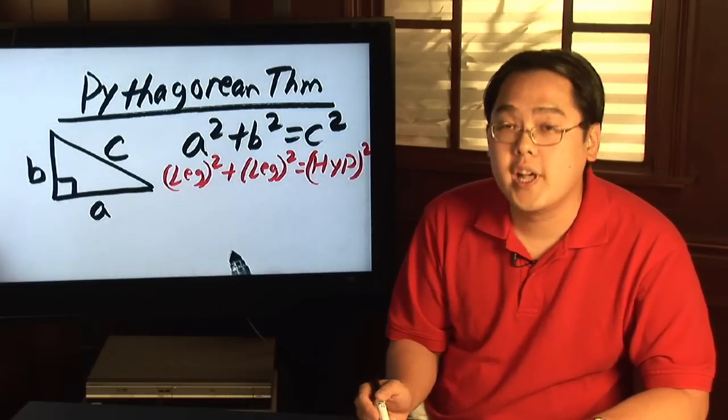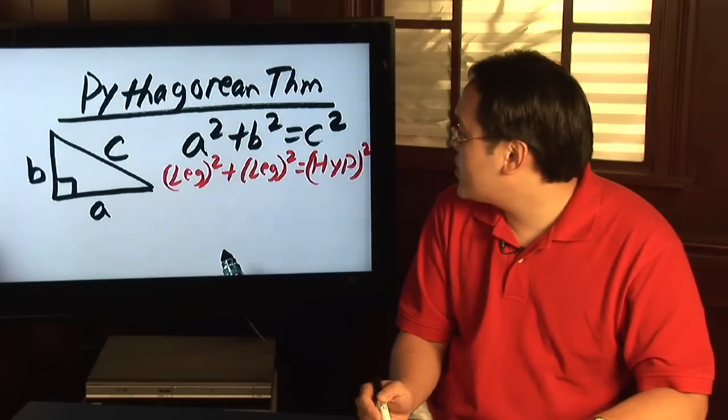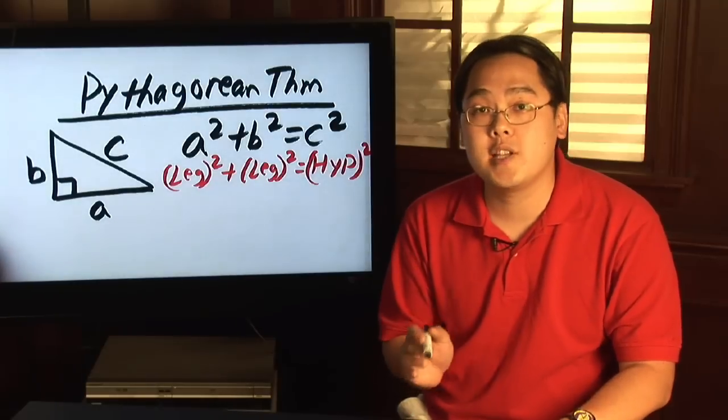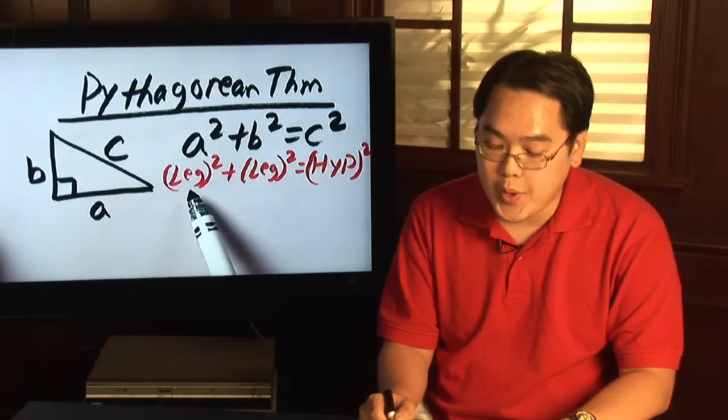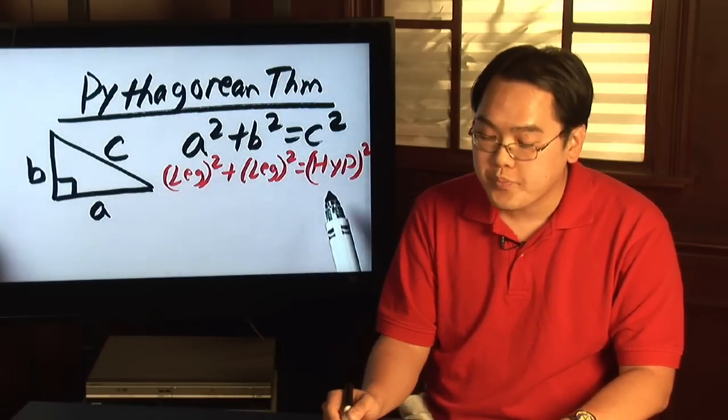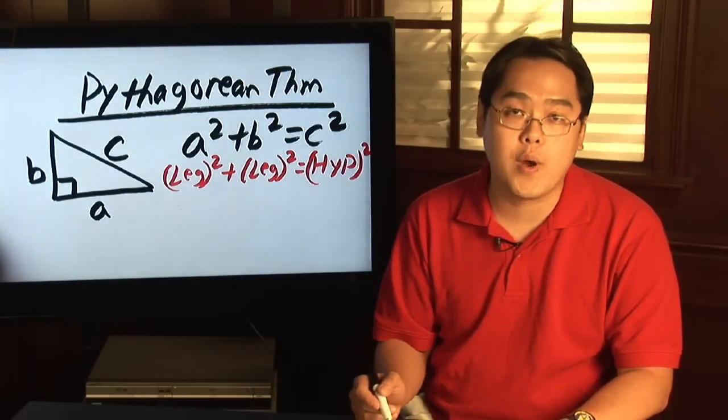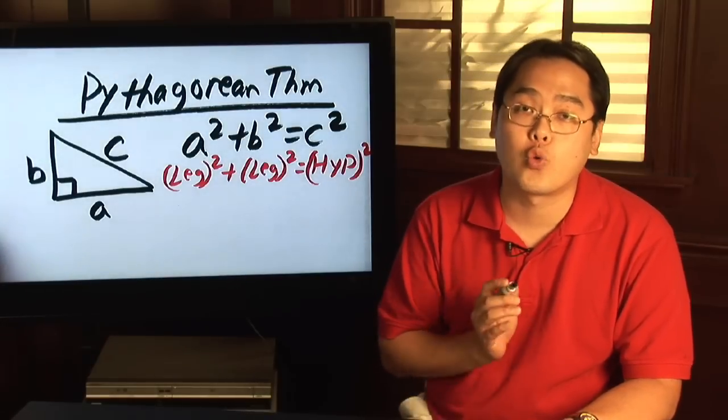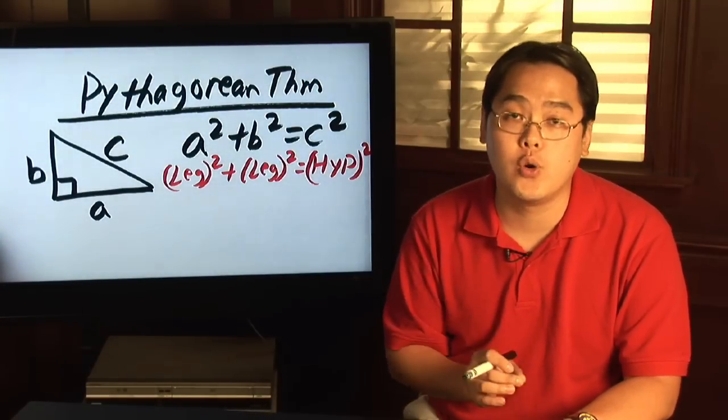Therefore the formula A squared plus B squared equals C squared, which means the leg squared plus the leg squared equals the hypotenuse squared. This is always true for right triangles, but for right triangles only.